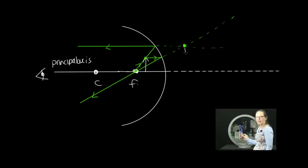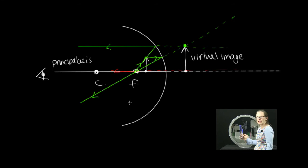We actually see the image being formed behind the mirror. This is a virtual image, and it is the right way up. If we did the same ray tracing for the bottom of the whiteboard marker, both rays would be reflected directly along the principal axis. We see rays traveling towards our eye and think they've traveled from behind the mirror. That is why when I held the whiteboard marker close to the mirror, it appeared enlarged and the right way up, as seen in the earlier video.